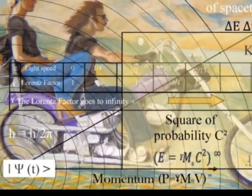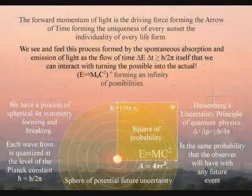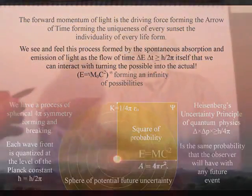The forward momentum of light is the driving force forming the arrow of time, creating a blank canvas that we can interact with, forming the possible into the actual.